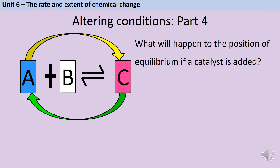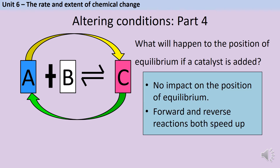What will happen to the position of equilibrium if a catalyst is added? If we add a catalyst to a reversible reaction, there is actually no impact on the position of equilibrium. A catalyst speeds up the rate of reaction, but it will speed up both the forward and the reverse reactions equally. So overall, there is no impact on the position of equilibrium.